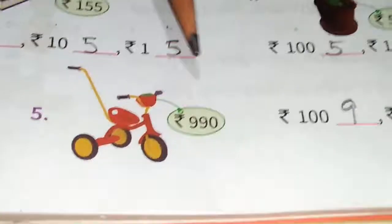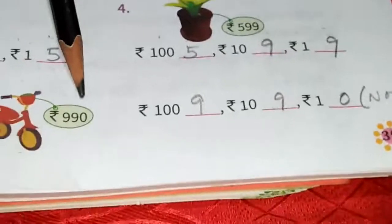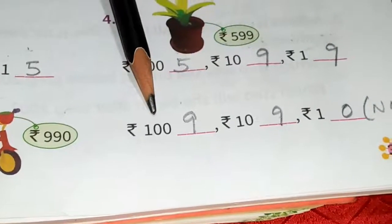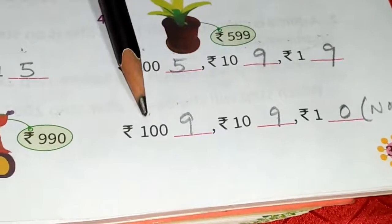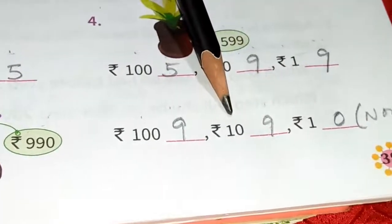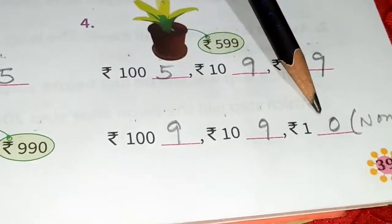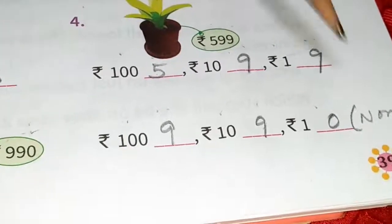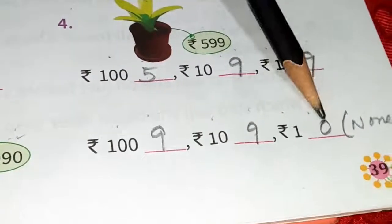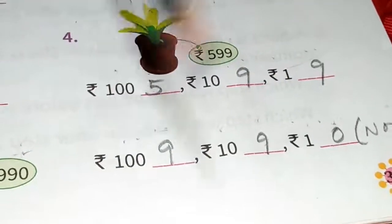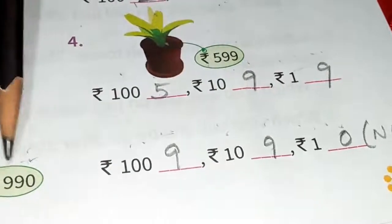Number 5: this toy costs rupees 990. We have to give 9 hundred-rupee notes — that makes 900. In the 10th place we have 90, so 9 ten-rupee notes — that makes 90. And we don't have to give any 1 rupee coin because there is nothing in the 1st place — 0. So, 9 hundred-rupee notes and 9 ten-rupee notes makes 990.